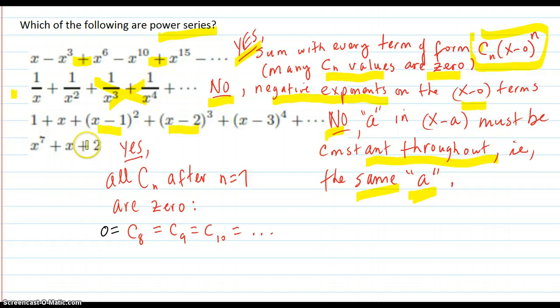This one, well it ends, it's not an infinite series, but it is a power series because you technically could say that all the c sub n constants after 7, because it's x to the 7, are all zero after that.